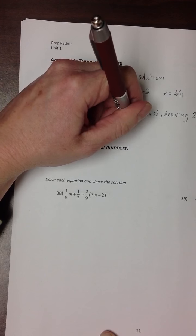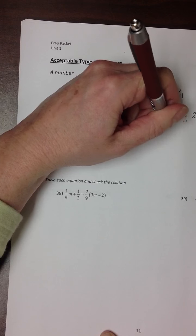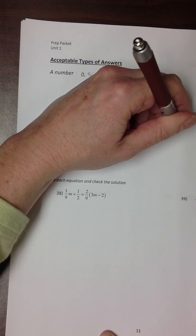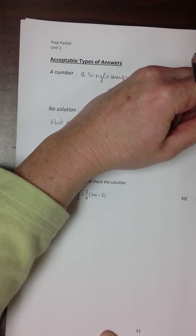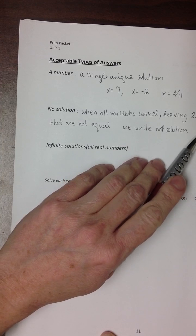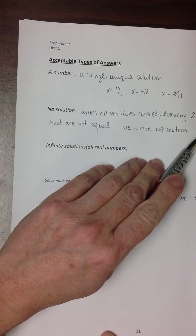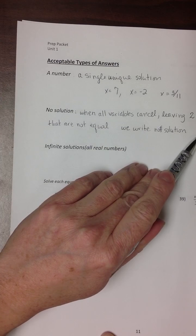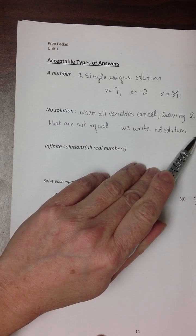We write this answer using the symbol of a zero with a slash through it. Some of you have been using that slash to show the difference between the number zero and the letter O. We'll have to move away from that. This symbol has a specific meaning in math—it means no solution. It does not mean zero.